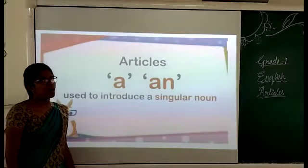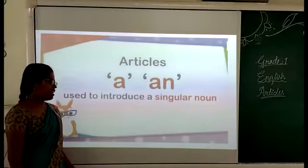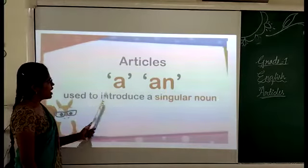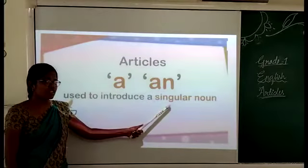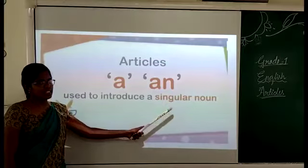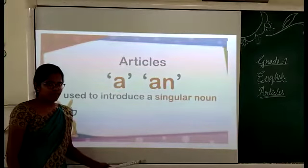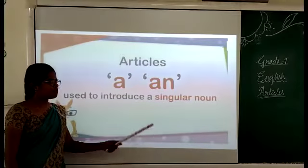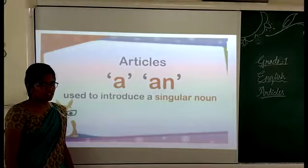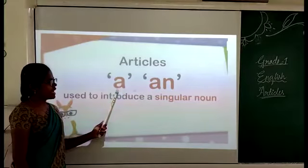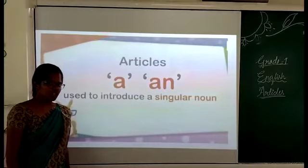Name of a person, place, thing, or animal — that is a noun. A and an are used to introduce a singular noun. What is singular? If there is only one pen, one pencil, one animal, then that comes under singular. So we use a and an to introduce a singular noun.